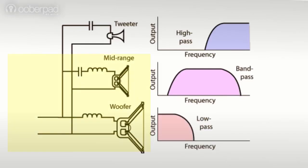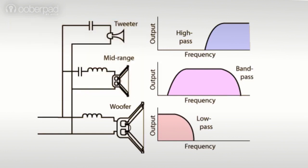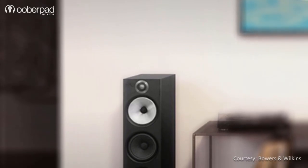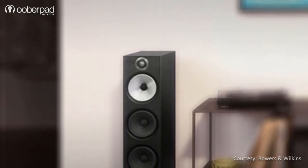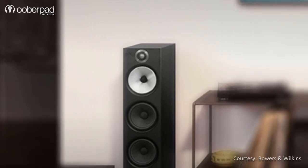In a three-way speaker, the first crossover frequency is between the woofer and the mid-range driver, usually between 80 and 120 hertz. The other crossover point is between the mid-range driver and the tweeter, usually around 2500 hertz or 2.5 kilohertz. All three separated frequency bands are then sent to their respective drivers.